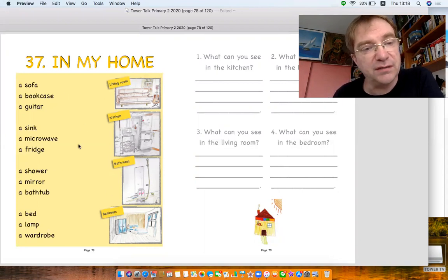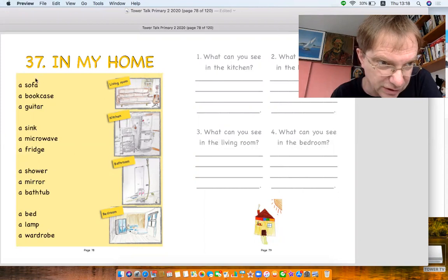Now in each room we've got different items. If you look in the picture you can see here a sofa, a bookcase, there's the bookcase at the back, a guitar, that's in Mr. Sheriff's living room.